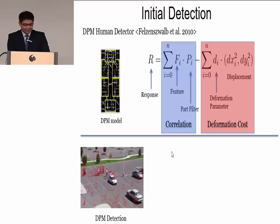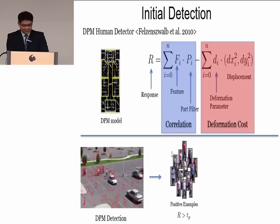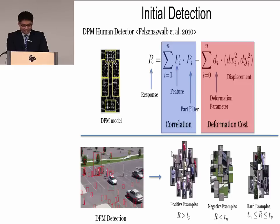If we apply the DPM model on a video frame, we can get many detections. We can group the detections into three groups. If the response is larger than threshold TP, it is a positive example. If the response is smaller than threshold TN, it is a negative example. If the response is between TP and TN, it is a hard example — meaning it is very difficult for DPM to determine the label.